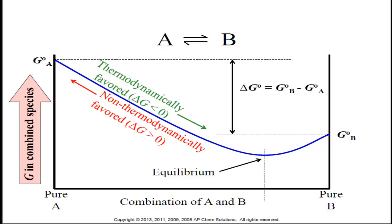We're going to start by looking at our graph. On the y-axis, we have the actual free energy available in the chemicals taking part in the chemical reaction — the combined G for the reactants and the products at any point in time. The difference in free energy, or delta G superscript zero at standard conditions, is the maximum amount of free energy available to do work when all of the reactants are converted into products. As you can see from the graph, equilibrium lies somewhere between 100% reactants and 100% products — in this case, about 80% products and 20% reactants.